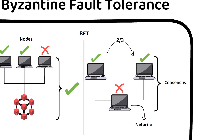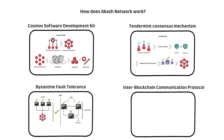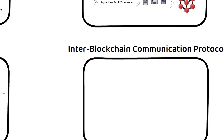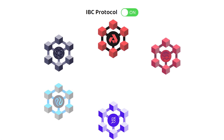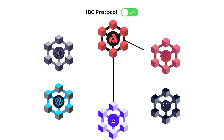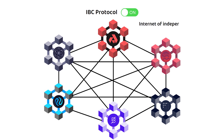Lastly, the Akash Network has the Cosmos SDK's Inter-Blockchain Communication Protocol, or IBC Protocol, enabled, which allows interoperability between different blockchains in the Cosmos ecosystem, creating a decentralized internet of independent blockchains.